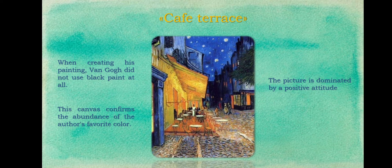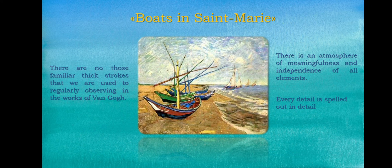The picture is dominated by a positive attitude. In this picture, the artist depicts all objects in a manner unusual for him. The canvas is full of lightness and weightlessness, multi-colored boats on a background of brown and golden sand and bluish transparent waves. The beach looks absolutely lonely and abundant.